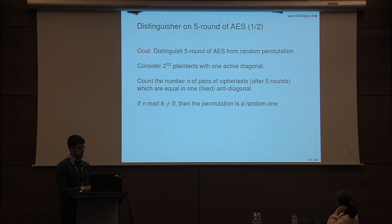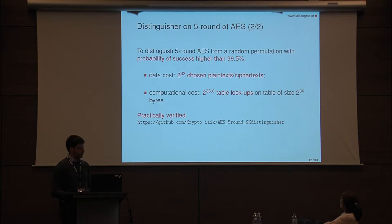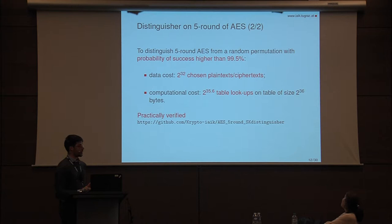Assuming for the moment that this property is true — I will give a proof in the final part — how can we use it to distinguish AES from a random permutation? It is very simple. We start with the set of 2^32 chosen plaintexts, count the number of pairs of ciphertexts which are equal in one fixed anti-diagonal. If this number is not a multiple of eight, we deduce that the permutation is random. To distinguish five rounds of AES from a random permutation with probability of success higher than 99.5%, we need 2^32 chosen plaintexts and a computational cost of approximately 2^36 table lookups. An implementation is available at the provided link.